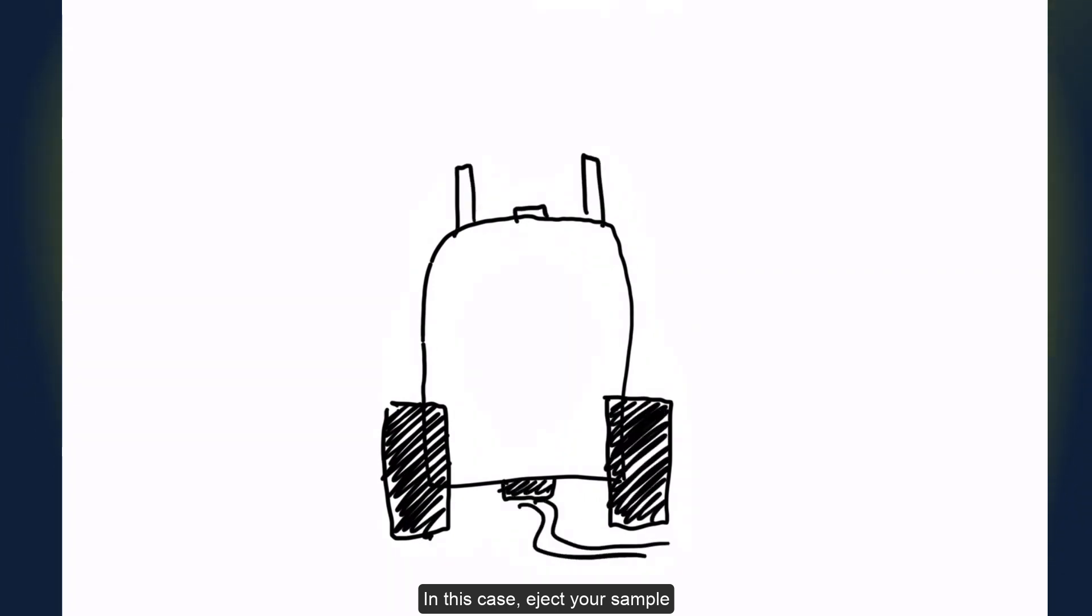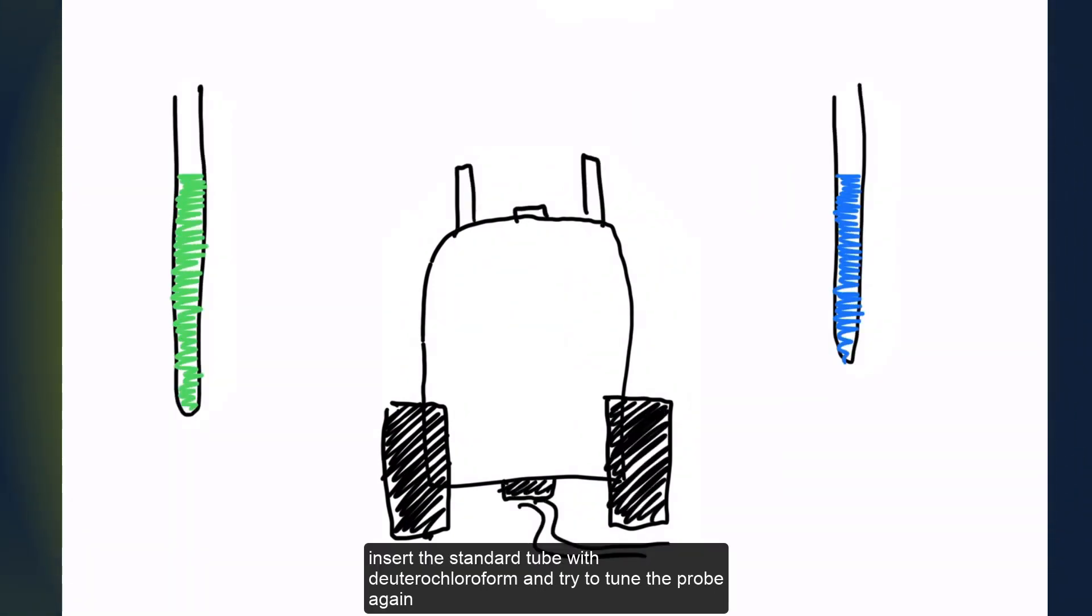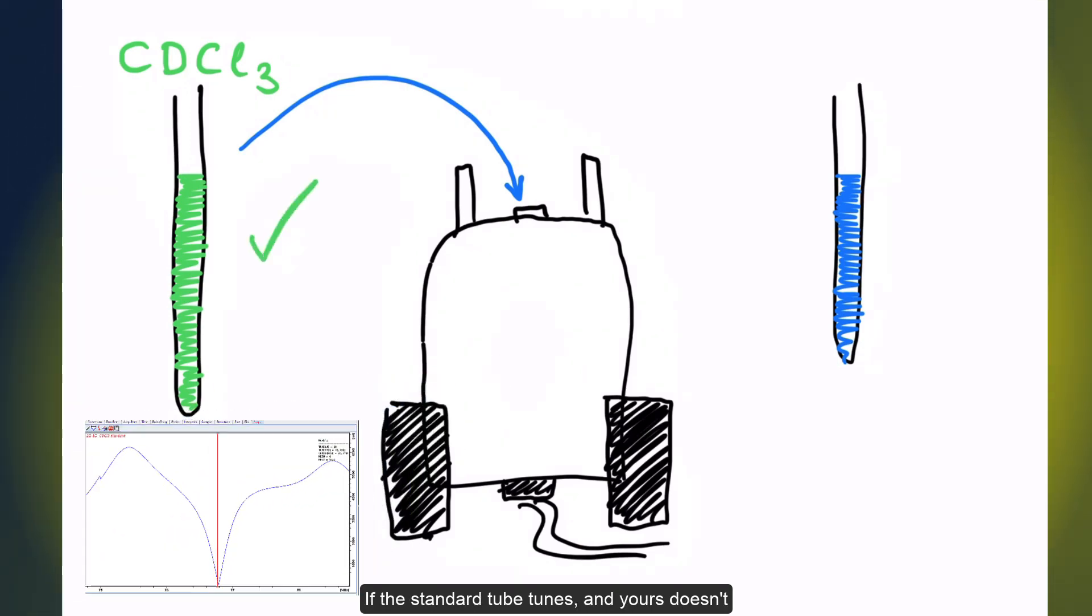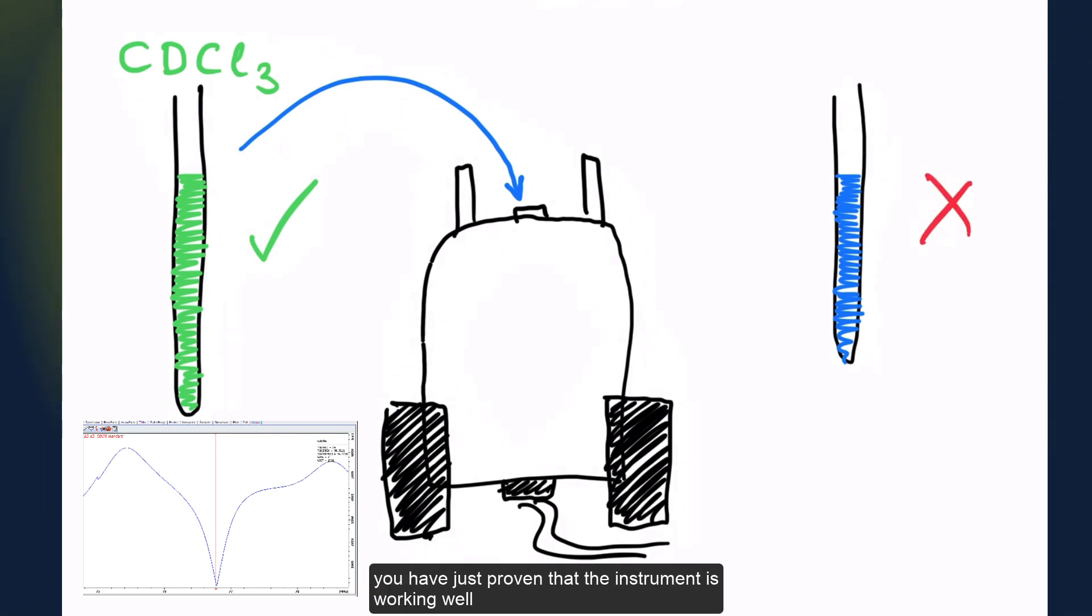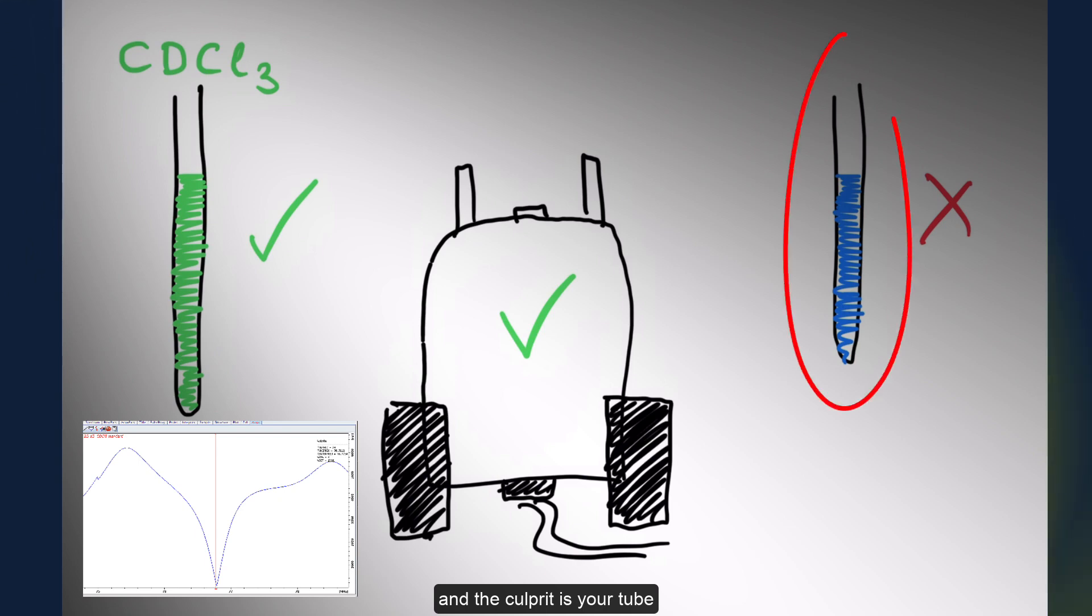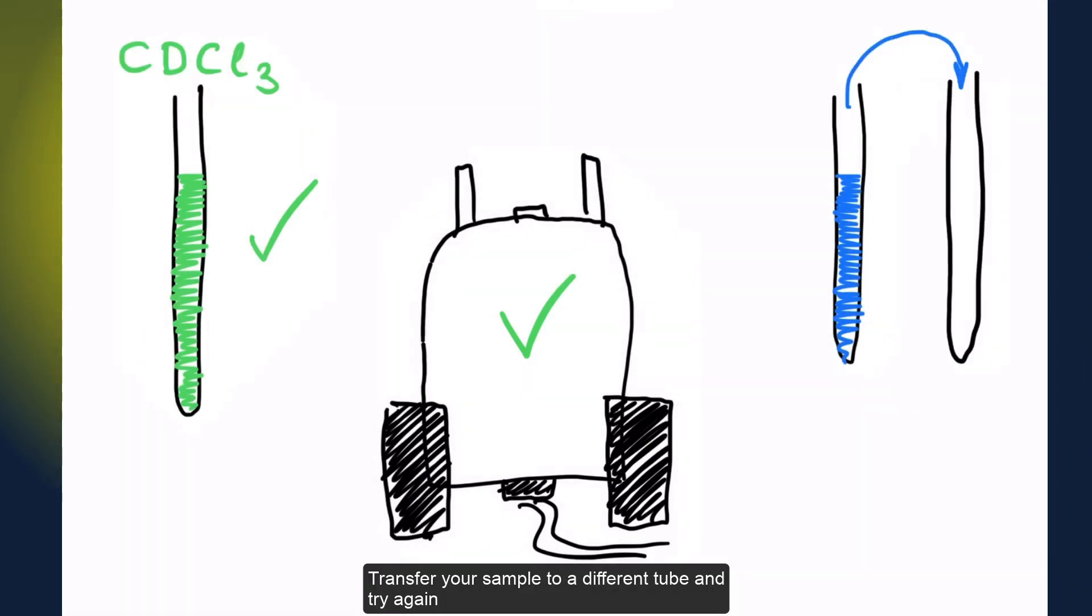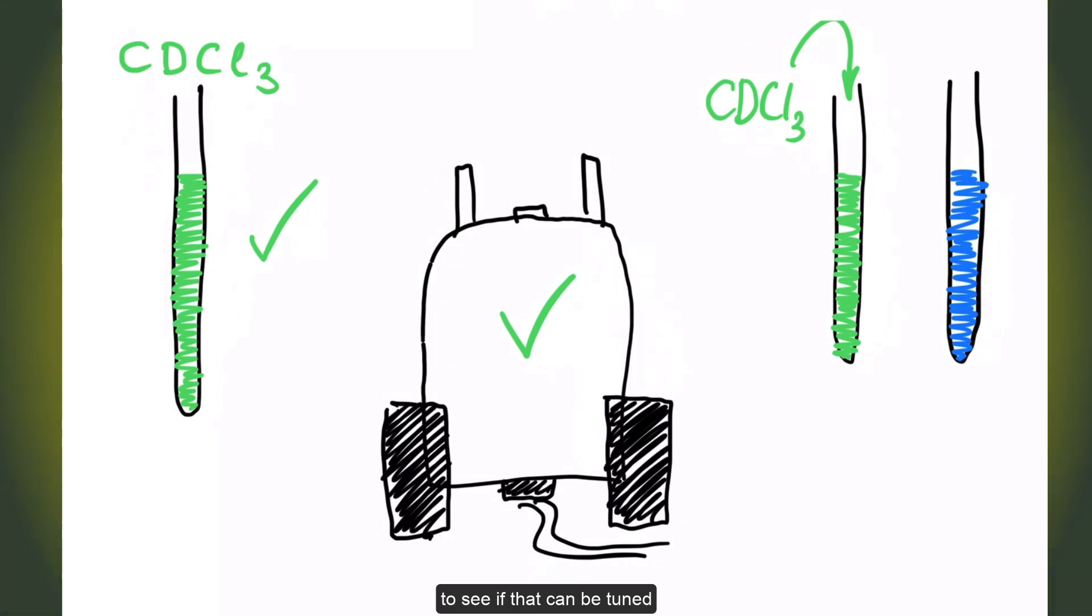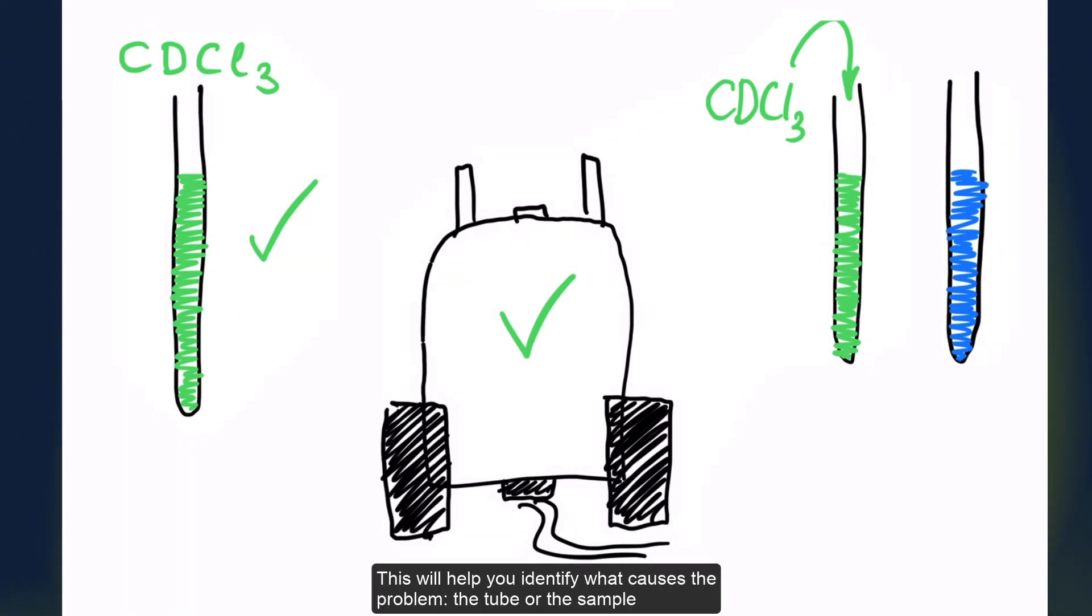In this case, eject your sample, insert the standard tube with deuterachloroform, and try to tune the probe again. Sometimes, defective tubes or precipitating samples prevent tuning. If the standard tube tunes and yours doesn't, you have just proven that the instrument is working well, and the culprit is your tube. Transfer your sample to a different tube and try again. You may also check your tube directly by adding pure solvent to your bad tube to see if that can be tuned. This will help you identify what causes the problem, the tube or the sample.